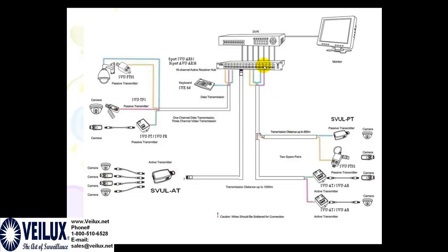Here we have an active or passive hub. We carry hubs in both passive and active versions. Passive hubs do not need a power supply, while active hubs do. The twisted pair cables go into the hub, then out via coax to the DVR. You can run the twisted pair cables all the way to this hub in a server room, and then run the coax from the hub right to the server for an easy installation.